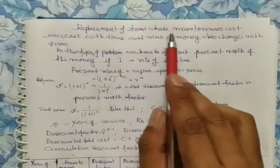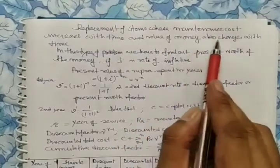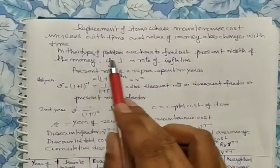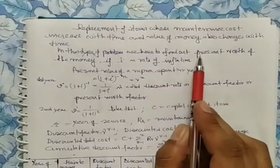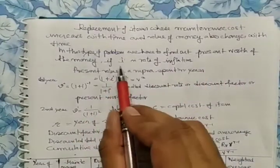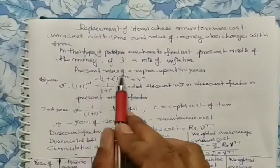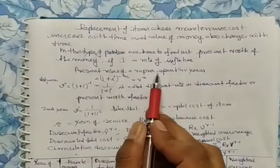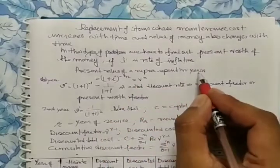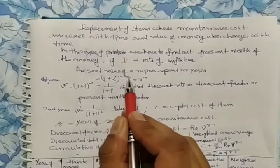Replacement of item whose maintenance cost increases with time and value of money also changes with time. In this type of problem, we have to find out the present worth of the money. If i is the rate of inflation, then present worth of money for 1 rupee spent in n years will be (1 + i) to the power minus n.